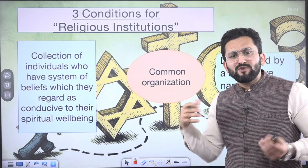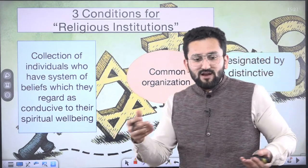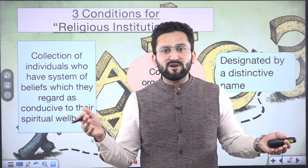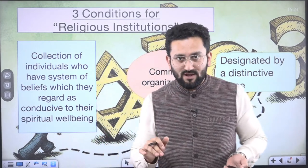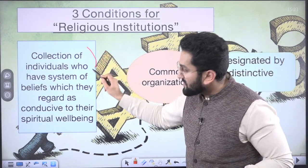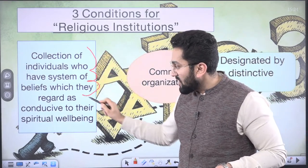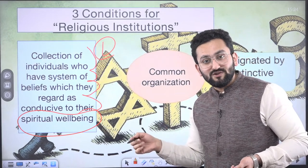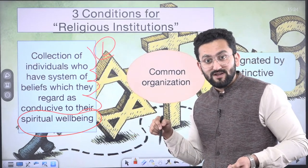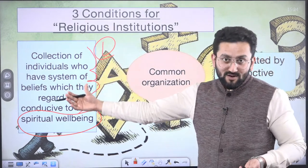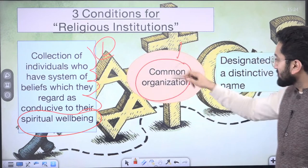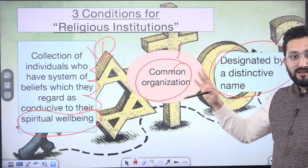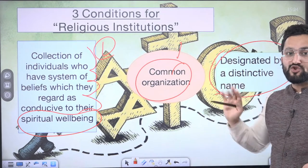Three conditions for a religious institution. First: a collection of individuals who have a system of belief which they regard as conducive to their spiritual well-being — it is not a private institution, it is a group of individuals who are part of a religion. Second: a common organization should be there. Third: they should have a distinct name. This is the criteria to decide whether an institution is a religious institution or not. Please remember these kind of details because UPSC plays on these lines.